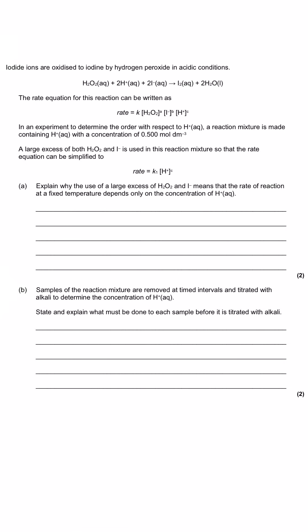In this question we are shown that there is a reaction between iodide ions and hydrogen peroxide — the iodide ions and the hydrogen peroxide make iodine and water when reacted in the presence of acid. We've got a rate equation: rate equals k, concentration of hydrogen peroxide raised to the power of something — we don't know what the order is yet — multiplied by the concentration of iodide, again we don't know what the order is, and last of all the acid raised to the order of c.